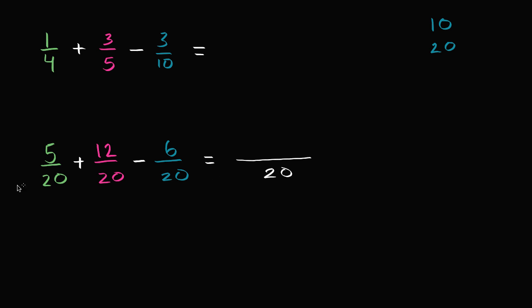This is going to be 5/20 plus 12/20 minus 6/20. So another way of thinking about it, the way I just wrote it here, 5 plus 12 minus 6, all of that over 20. This is how many 20ths are going to result.